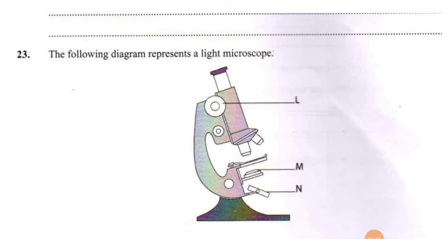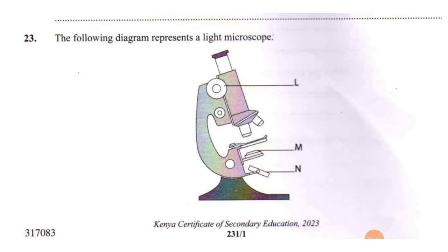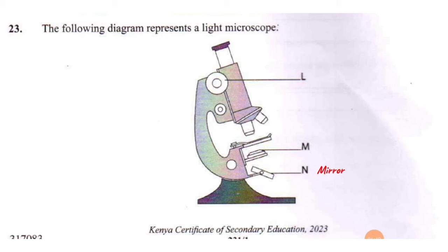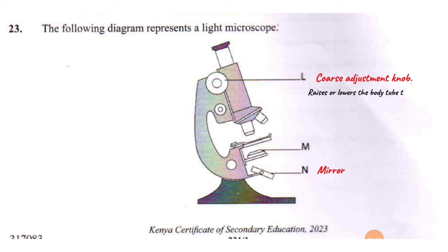Our last question: the following diagram represents a light microscope. Part A: name the part labeled N — part N is the mirror. State the functions of the parts labeled L and M. L is the coarse adjustment knob, and M is the condenser. The coarse adjustment knob moves the body tube, allowing you to focus roughly on the specimen, bringing the image into rough focus. The condenser concentrates light rays onto the stage.